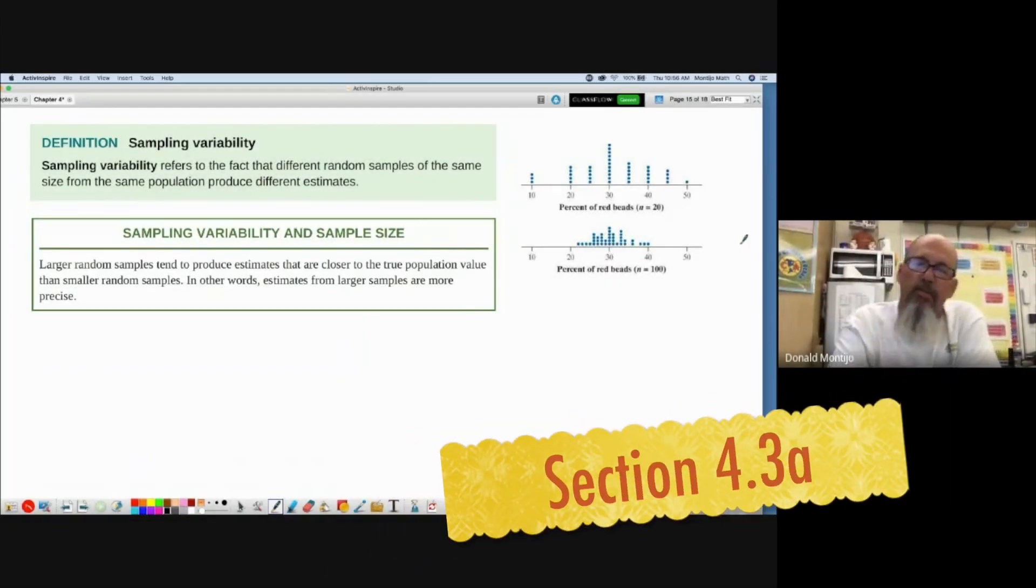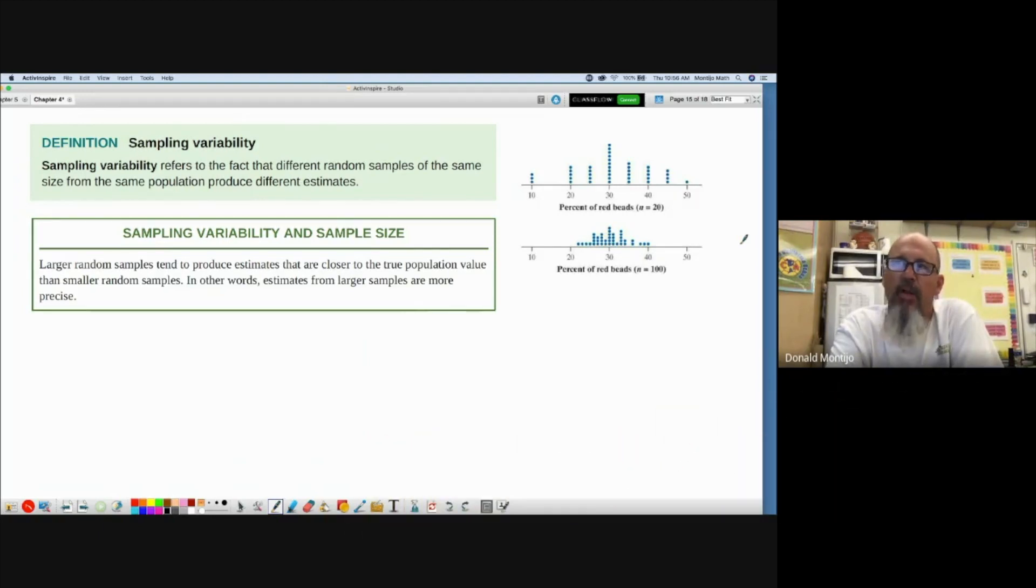What are we trying to do? We're trying to gather data from a sample to answer a question about a large population. If I gather data from a sample, one sample is certainly going to be different from the next sample. This idea is called sampling variability - we're going to get different values with different samples.